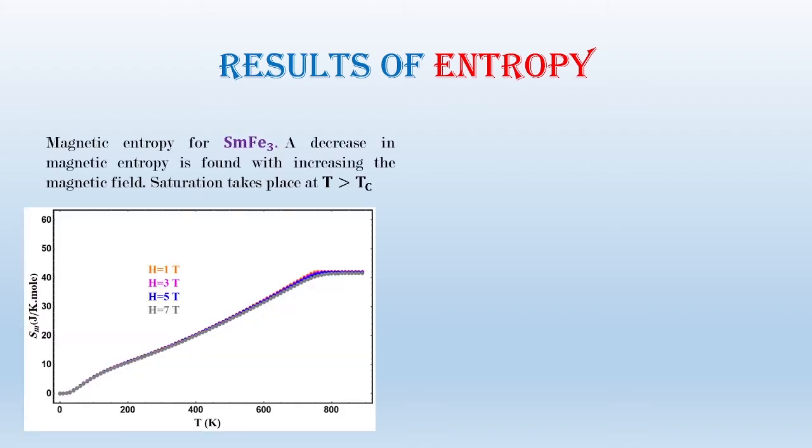Results of magnetic entropy. For samarium IR3, a decrease in magnetic entropy is found with increasing the magnetic field. Saturation takes place at T greater than Tc.